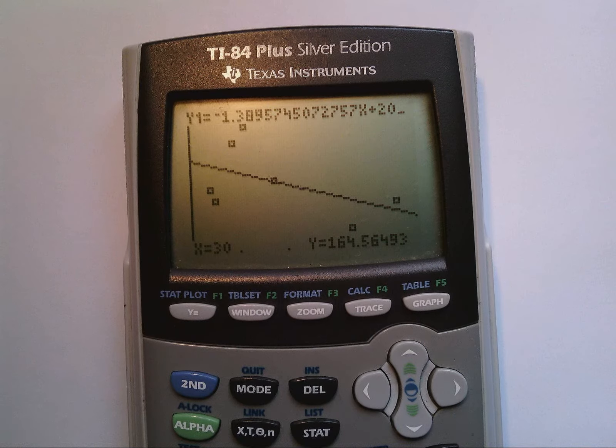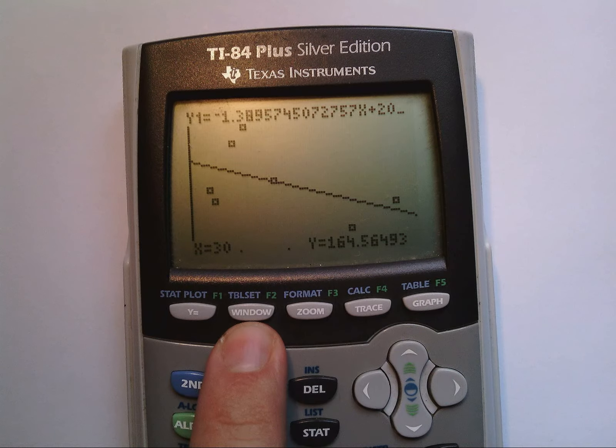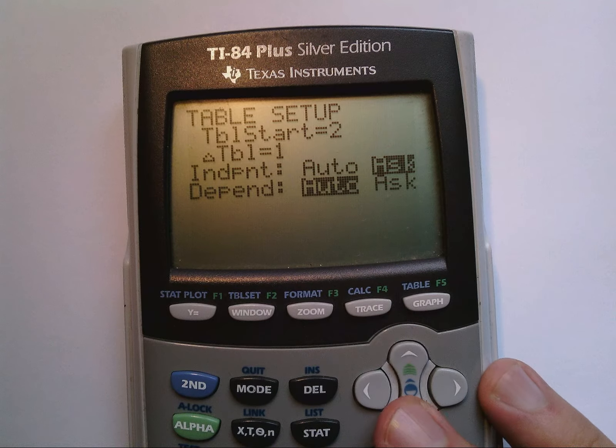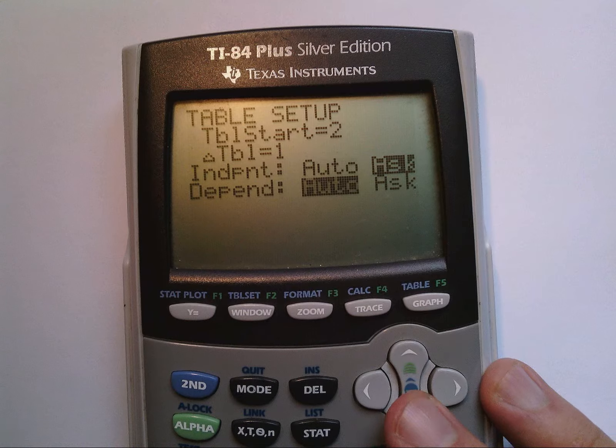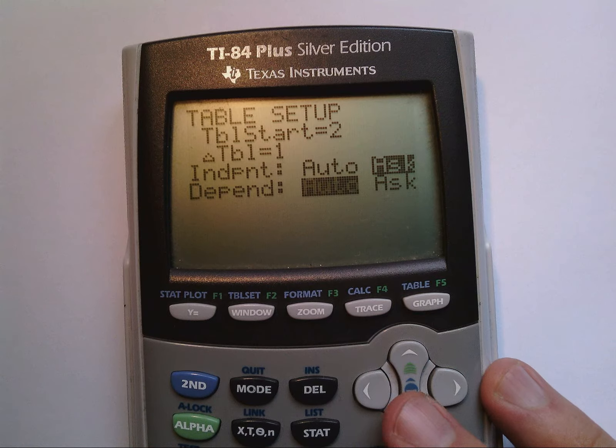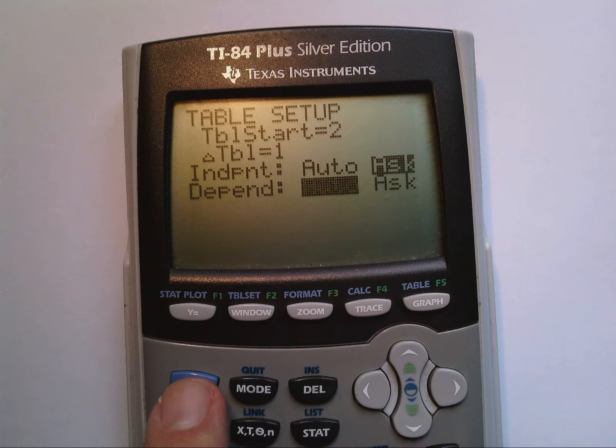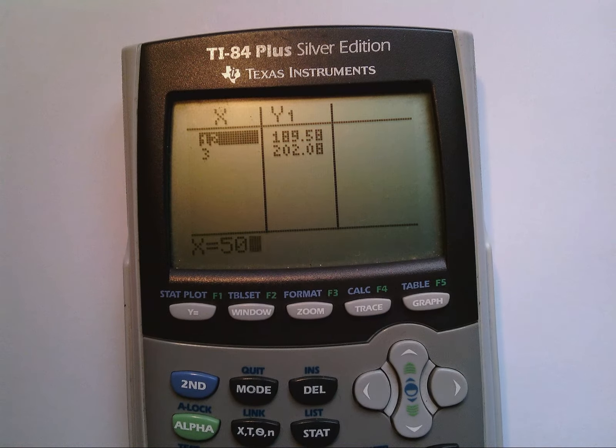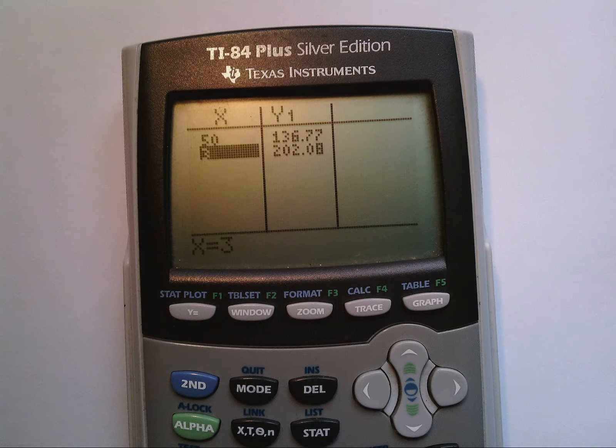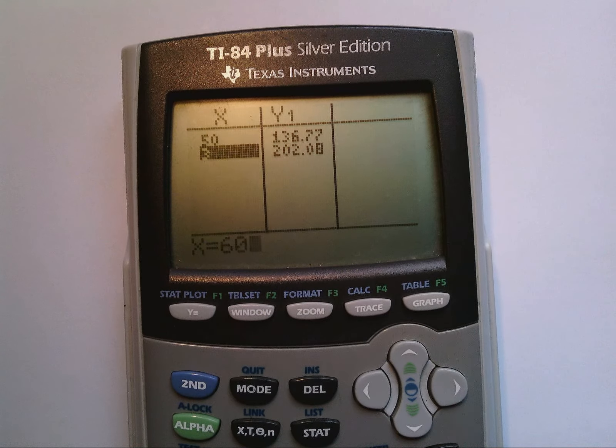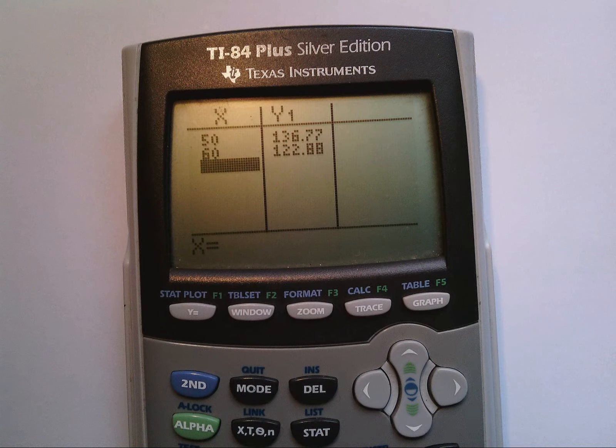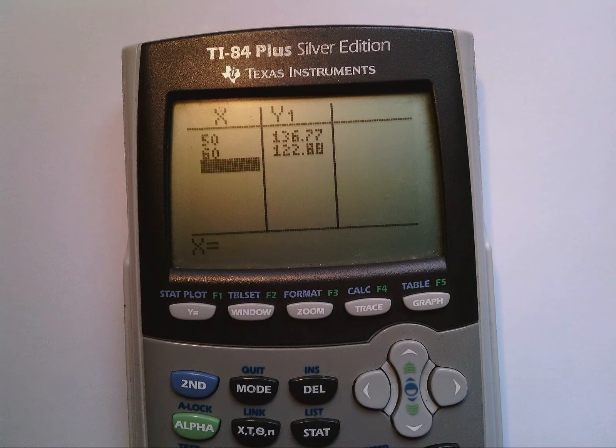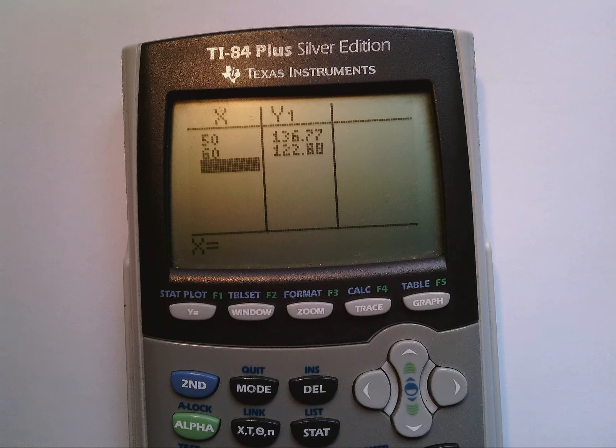Similarly, if your table set, so second window to bring up table set, is set so that you have the independent variable that asks for it, in other words, ask for x and make your dependent auto, and you go to table, second graph, you can type in whatever value you want. For 50, hit enter, that's what it would have been. For 60, hit enter, that's what it would have been. So these are things that I would have gone over in an algebra class, but they're useful to have, or just plug and chug using the calculator and making a table of values.